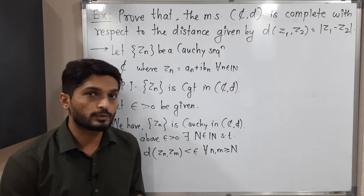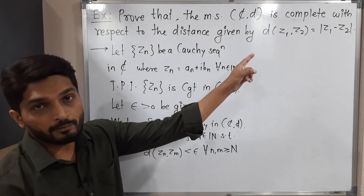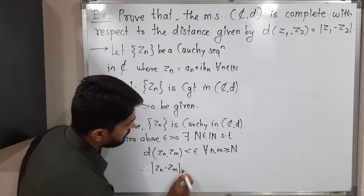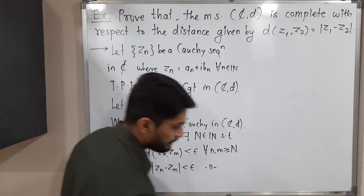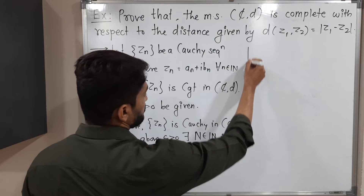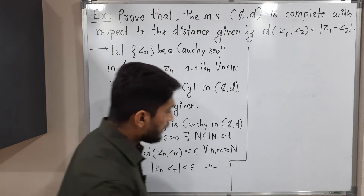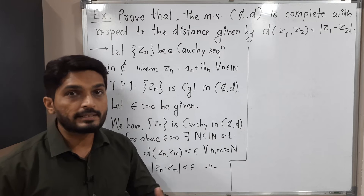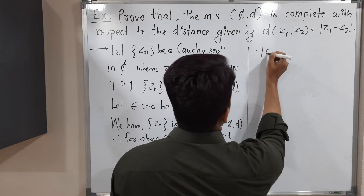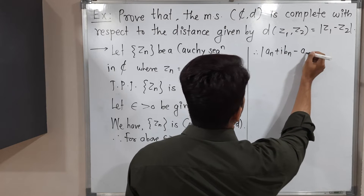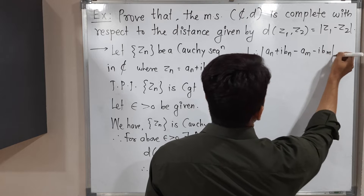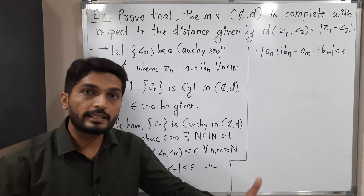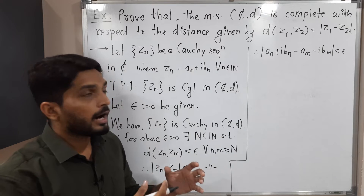The metric is defined as the modulus, so we have |Zₙ - Zₘ| < epsilon. Substituting the actual values, Zₙ = aₙ + ibₙ and Zₘ = aₘ + ibₘ, we get |(aₙ - aₘ) + i(bₙ - bₘ)| < epsilon. Since a minus sign is outside the bracket, the signs change when we expand.